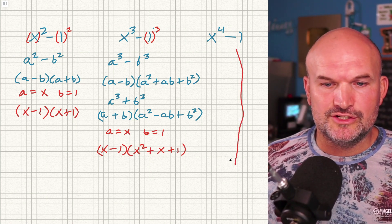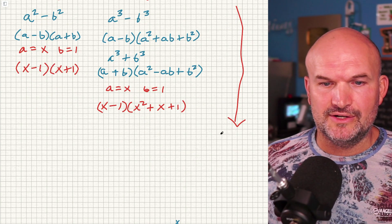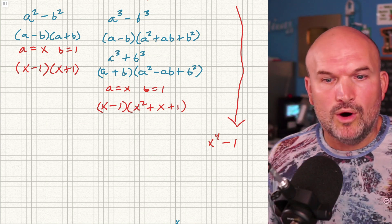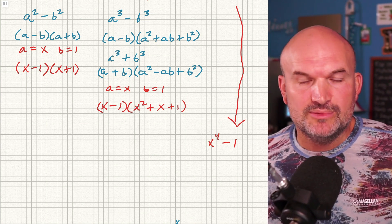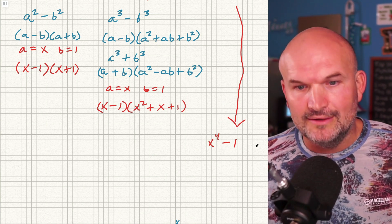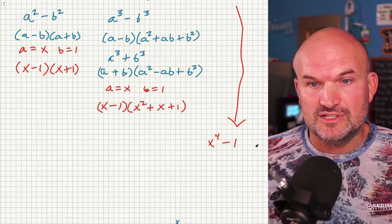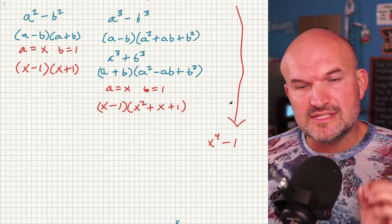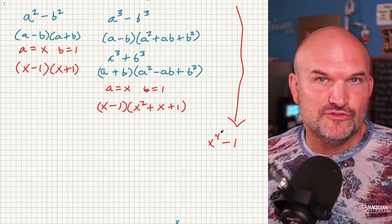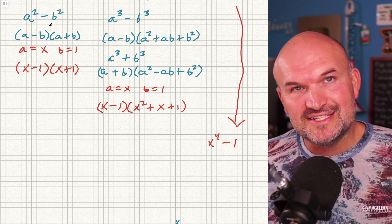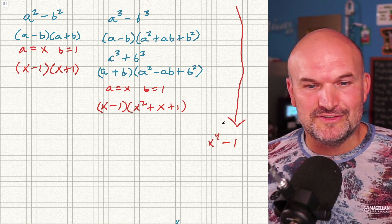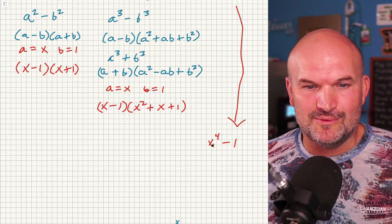Let's bring this one down. If I have x to the fourth minus 1, hopefully you can recognize that 1 can be represented as a number to the fourth power — 1 to the fourth power is 1, just like 2 to the fourth power is 16. So look for those numbers that are to the fourth power. We have a difference of two fourths, and it's going to be very similar to the difference of two squares, not so much the difference of two cubes, but there are similarities.